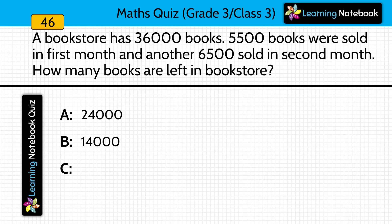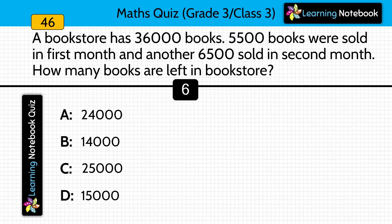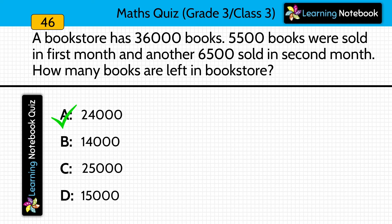A bookstore has 36,000 books. 5,500 books were sold in the first month and another 6,500 books were sold in the second month. How many books are left in the bookstore? Answer is 24,000. Total books: 36,000. Books sold in both months: 5,500 plus 6,500 equals 12,000. Subtract 12,000 from 36,000 to get 24,000.